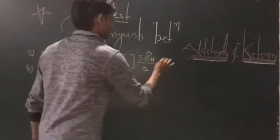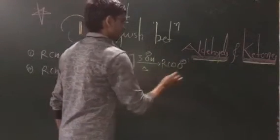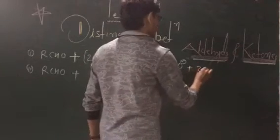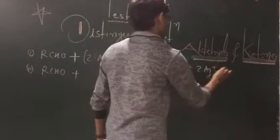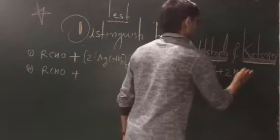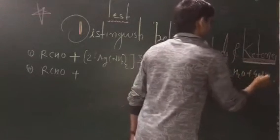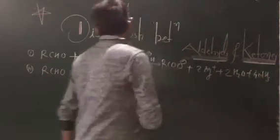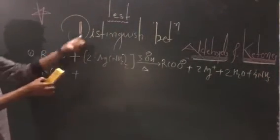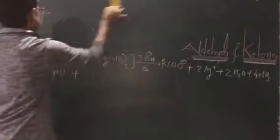The oxidation of aldehyde leads to the formation of carboxylate ion, plus 2Ag⁺, plus 2 water molecules, plus 4 ammonia. This reaction is the distinguished test of aldehydes and ketones.